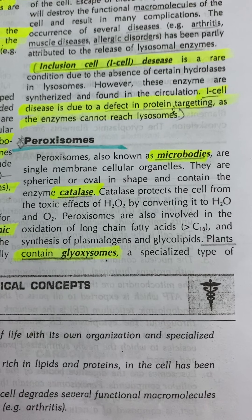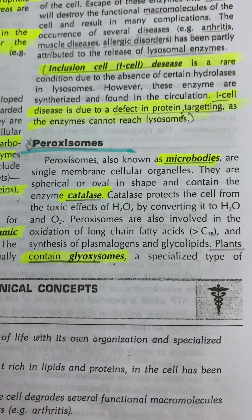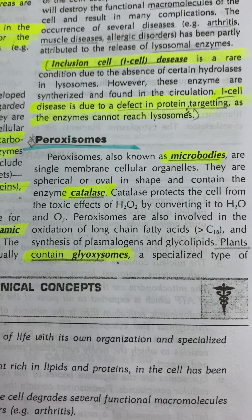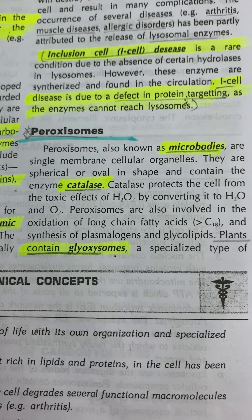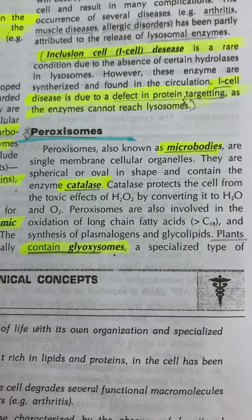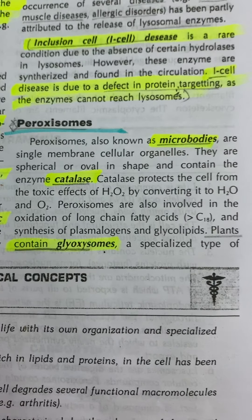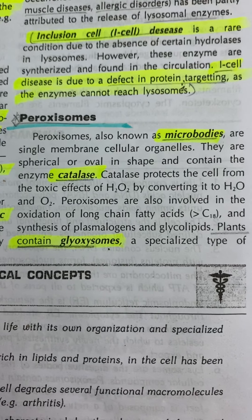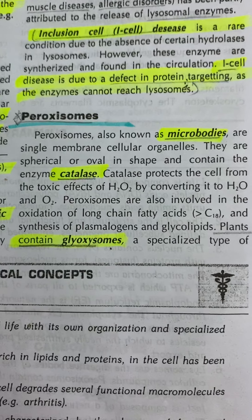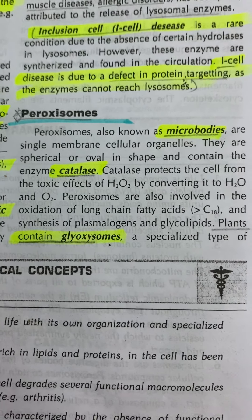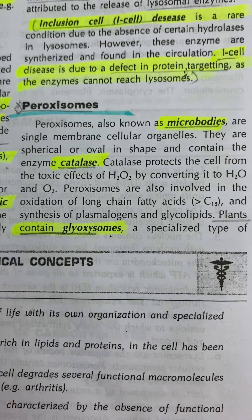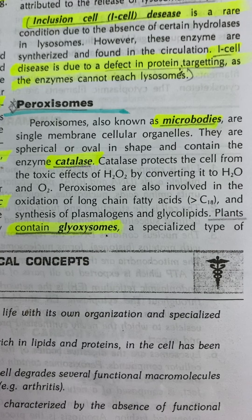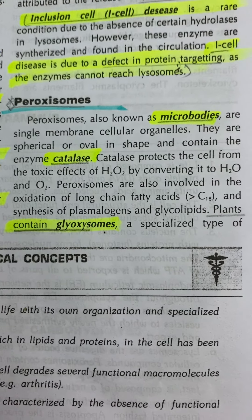Peroxisomes, also known as microbodies, are single-membrane cellular organelles that are spherical or oval in shape. They contain the enzyme catalase, which protects the cell from the toxic effects of hydrogen peroxide (H2O2) by converting it to water (H2O) and oxygen (O2). Peroxisomes are also involved in the oxidation of long-chain fatty acids (C18) and the synthesis of plasmalogens and glycolipids.